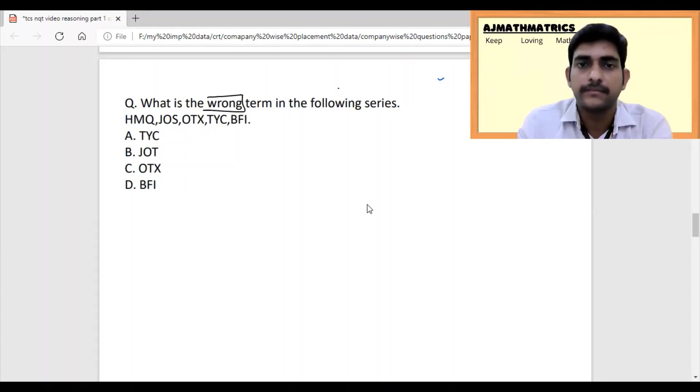We need to find the wrong term in the series. This is an odd man type question - find which is different out of five figures dealing with alphabets. I suggest converting to numbers because that's more familiar. H is 8, M is 13, Q is 17, J is 10, O is 15, S is 19, and so on for all options.